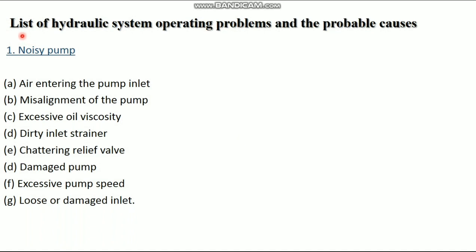Next, a list of hydraulic system operating problems and their probable causes. The first problem is a noisy pump. Pump noise may occur due to the following causes: air entering into the pump inlet — inside the pump, fluid only must enter, so if air enters, noise may occur; misalignment of the pump; excessive oil viscosity; dirty inlet strainer; chattering relief valve; damaged pump; excessive pump speed; and loose or damaged inlet.